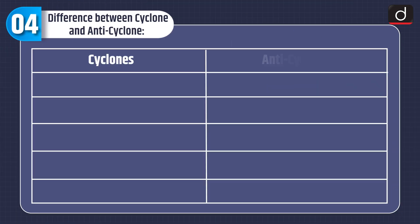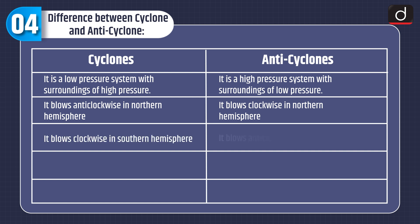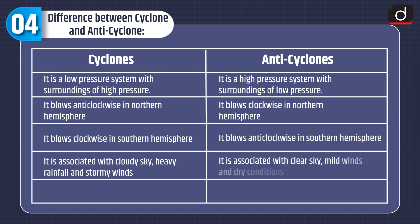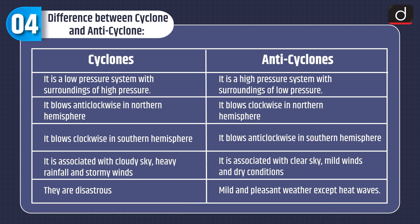Now let's discuss the difference between cyclone and anticyclone. A cyclone is a low pressure system with surroundings of high pressure, while an anticyclone is a high pressure system with surroundings of low pressure. Cyclones blow anticlockwise in the northern hemisphere and clockwise in the southern hemisphere, while anticyclones blow clockwise in the northern hemisphere and anticlockwise in the southern hemisphere. Cyclones are associated with cloudy sky, heavy rainfall and stormy winds, while anticyclones are associated with clear sky, mild winds and dry conditions. Cyclones are disastrous, while anticyclones bring mild and pleasant weather except for heat waves.